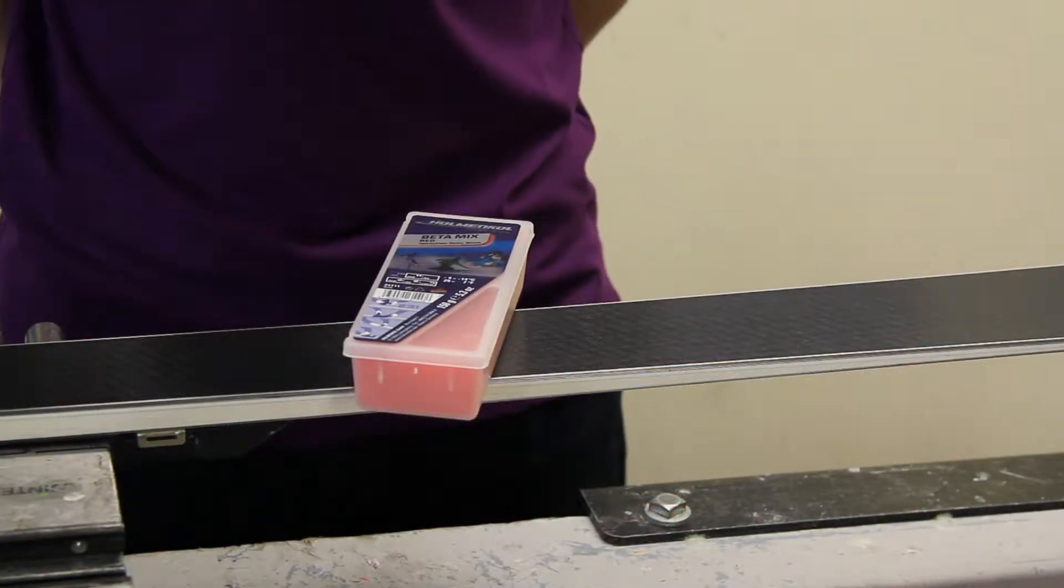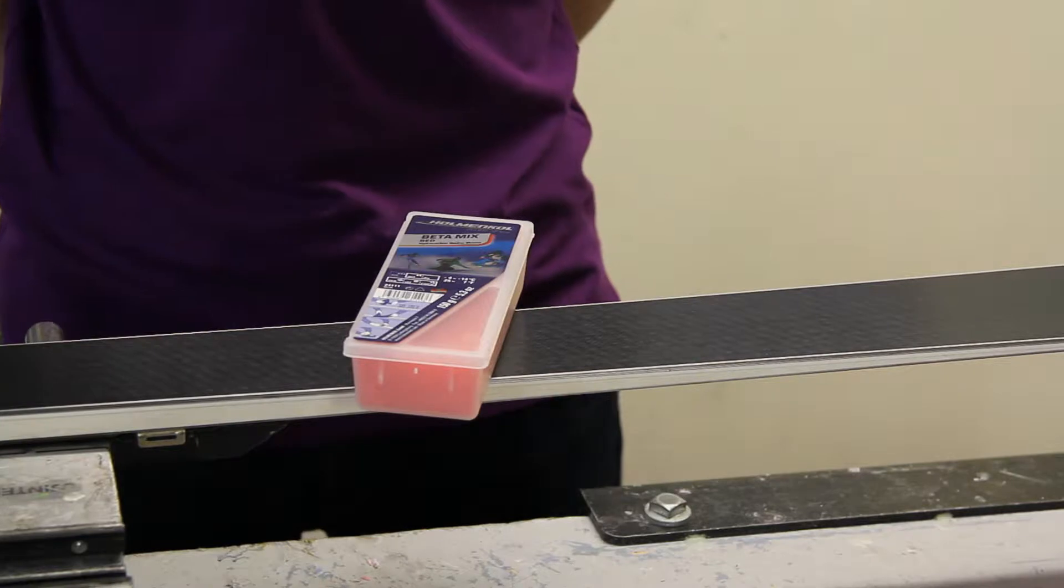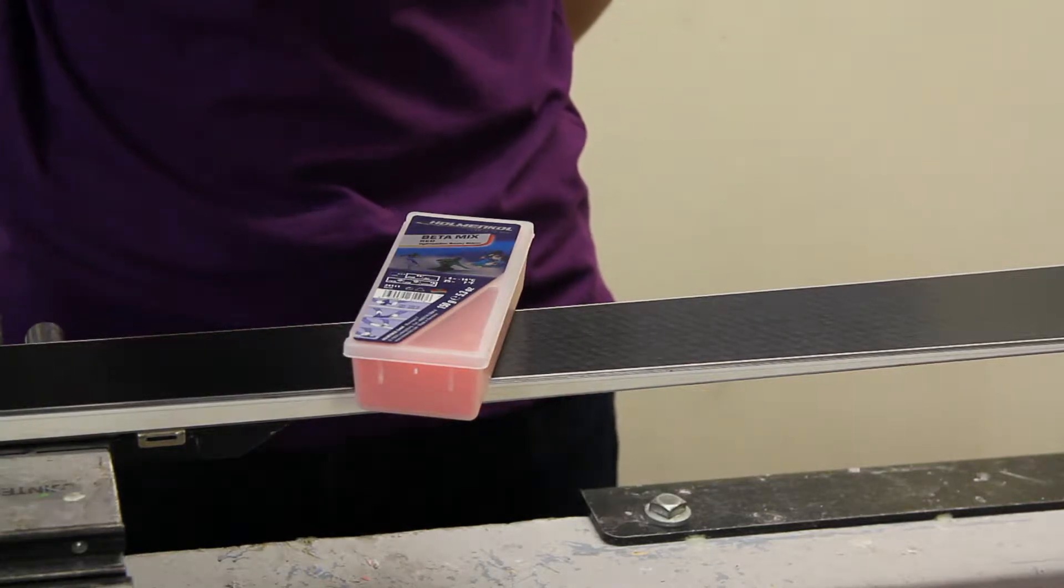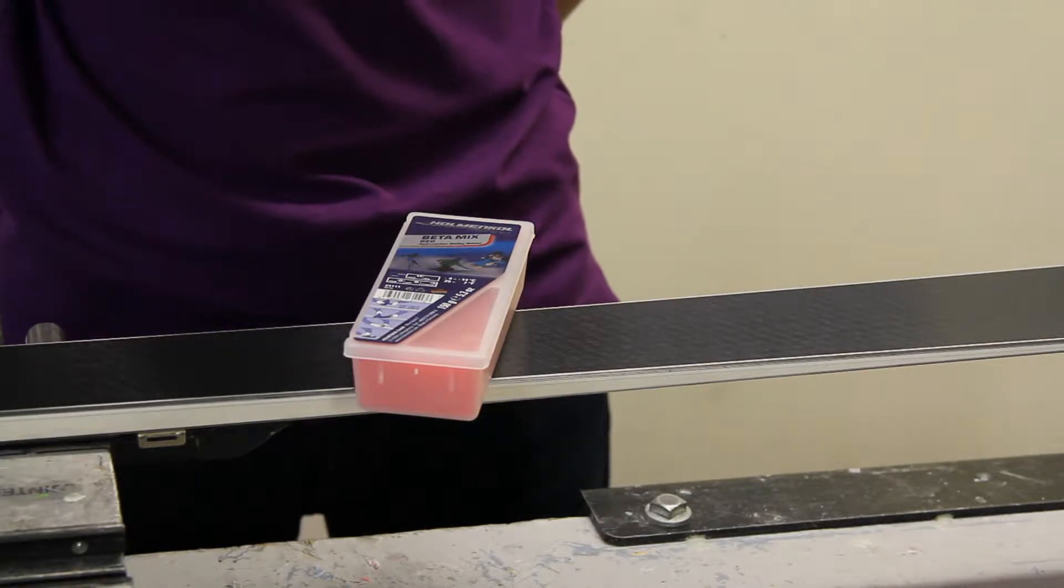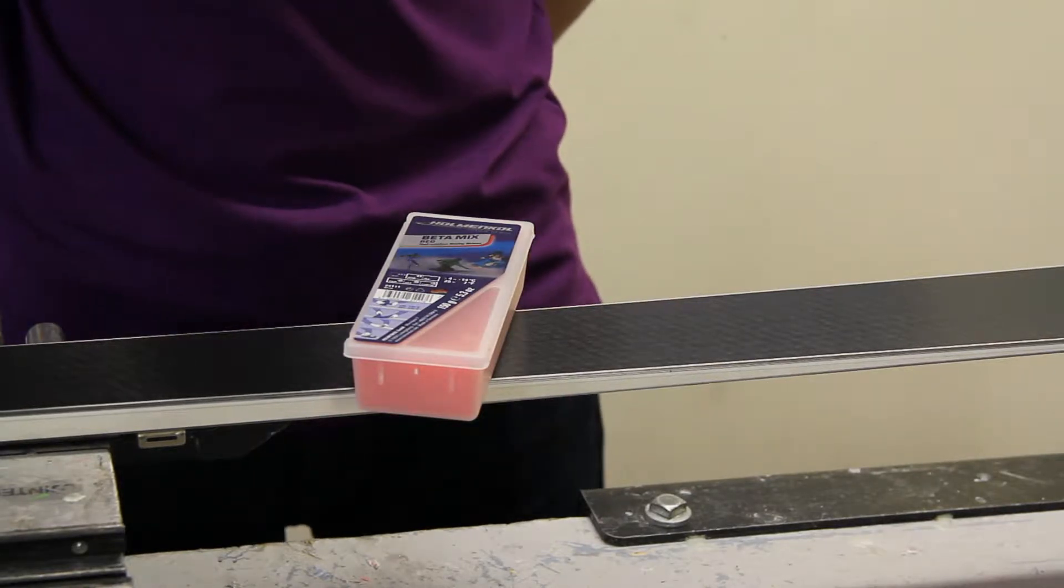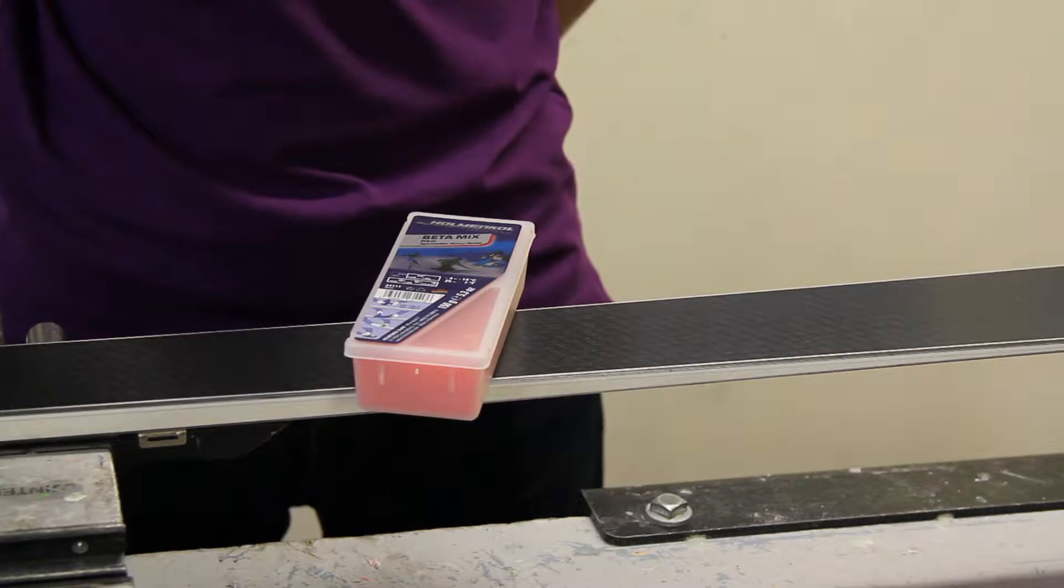Hot waxing can sometimes be seen as being complex, but actually it's very simple. All waxes have different temperature gradings and also snow gradings. These will be indicated on the front of the packaging.